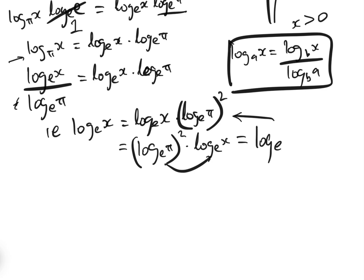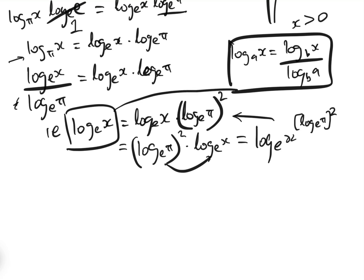log_e of x to the power of log_e(pi squared). So we have log_e(x) equals log_e of x to the power of log_e(pi squared).